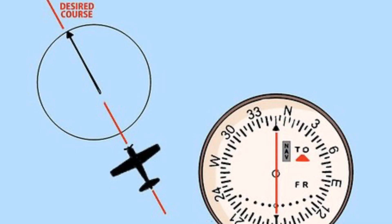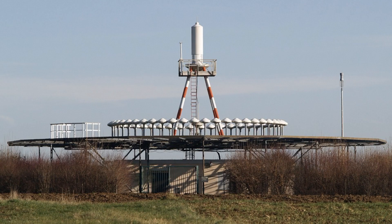To use VOR, a pilot selects a VOR frequency on the aircraft's navigation radio and sets the VOR course on the aircraft's navigation instrument. The VOR instrument will then display a radial line that corresponds to the selected course. As the aircraft approaches the VOR station, the VOR signal will change and the radial line will move. The pilot can use the movement of the radial line to navigate the aircraft towards or away from the VOR station.